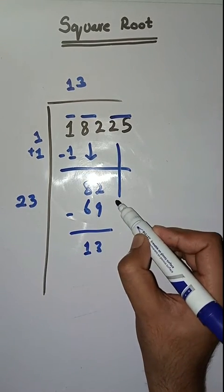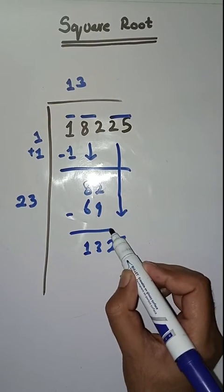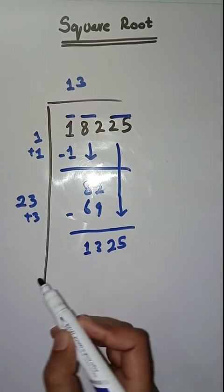Next pair is 25. We bring this down. Here we have to do 23 plus 3 which is equal to 26.